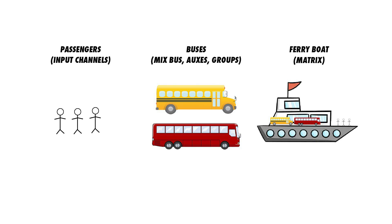You can usually only send individual input channels to an aux output, but a matrix is helpful when you want to send several auxes — which contain several inputs themselves — to a single output.